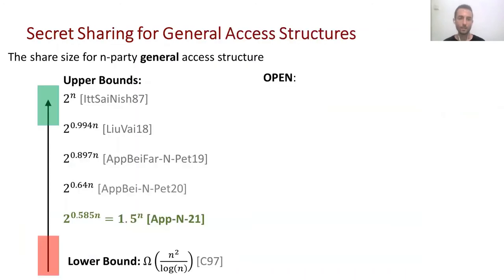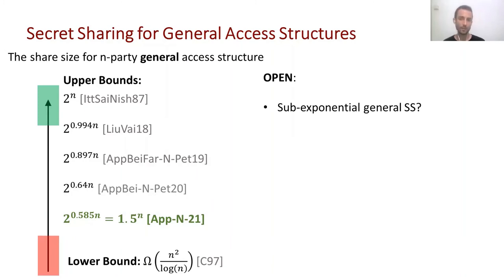So this is basically it. We've talked about the upper bounds and the different types of schemes in the paper, but the main open questions remain open: Can we achieve sub-exponential general secret sharing? Or can we improve the lower bound? Making progress in both of these questions should be a great achievement. Thanks for listening, and hope to see you next time!